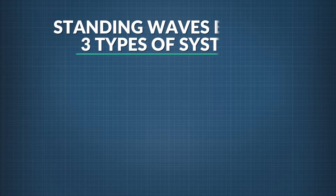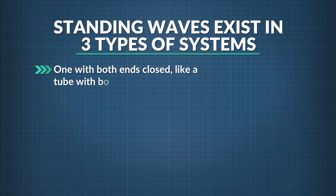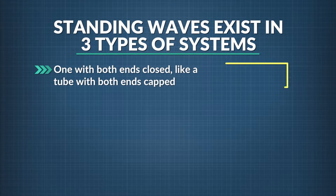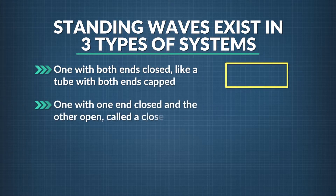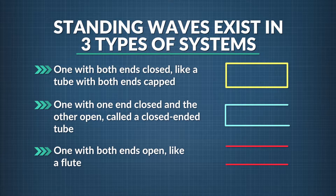In general, standing sound waves can exist in three types of systems: one with both ends closed, like a tube with both ends capped; a system with one end closed and the other opened, called a closed-ended tube; and one with both ends open, like a flute.